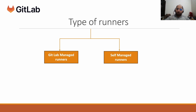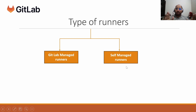Now, regarding types of runners: GitLab provides its own runners which are hosted by GitLab itself, and they are known as GitLab-managed runners. We can also set up our own runners on our own environments, and those are known as self-managed runners. This is the high-level category of runners.